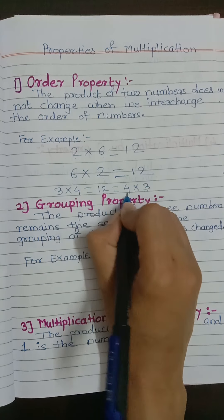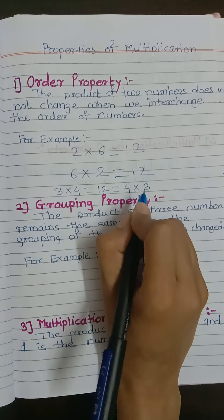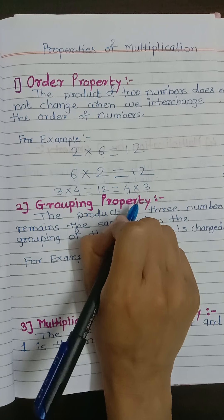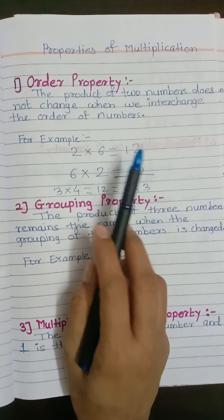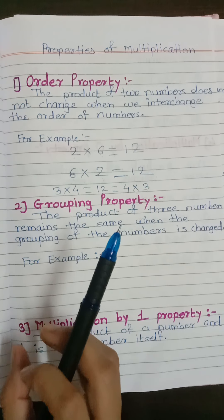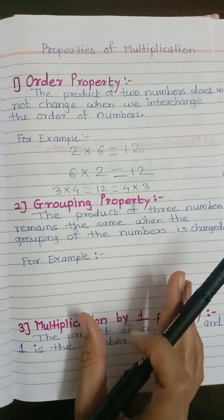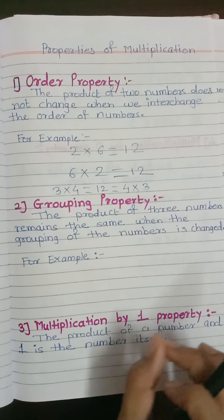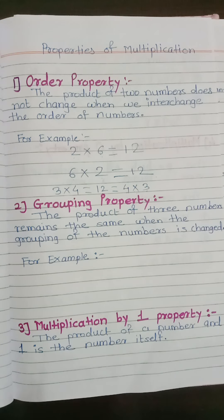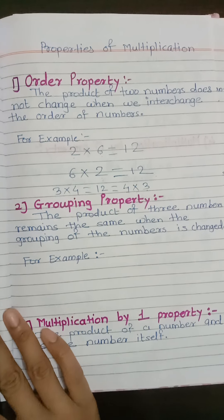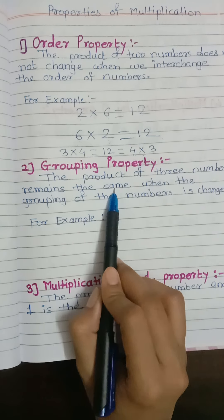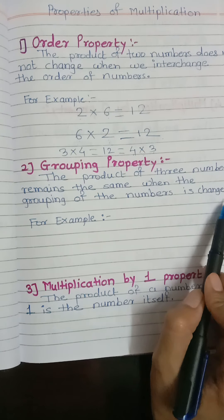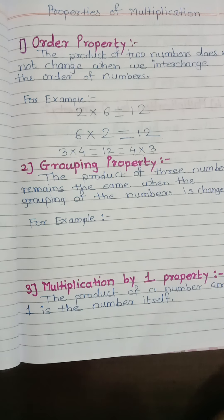For another example, 3 multiplied by 4 is equal to 12. And if we change the order of numbers, 4 multiplied by 3 is also equal to 12. So in both cases our product remains the same number. This is the order property — for any two numbers, if we change their order, the product will still remain the same.